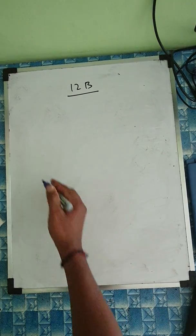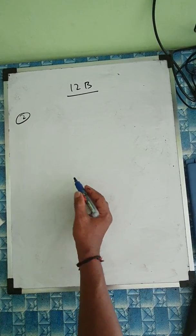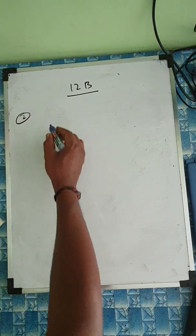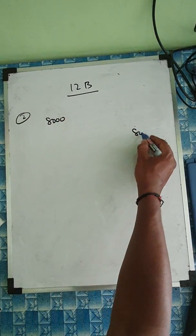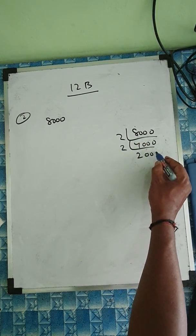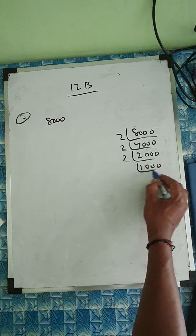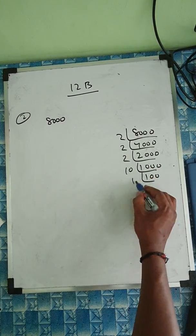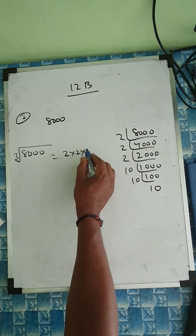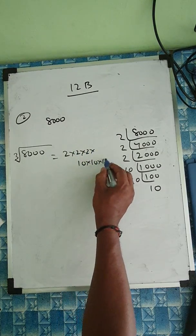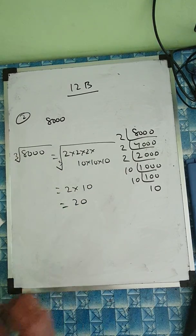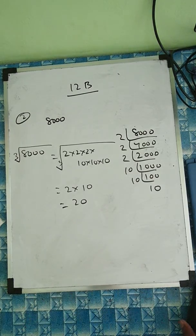Question number 2: find the cube root by estimation. For the first part, 8000 is given. If we do prime factorization — 2 repeated and 10 repeated — we can do it easily without estimation. So we use prime factorization: the answer is 20.